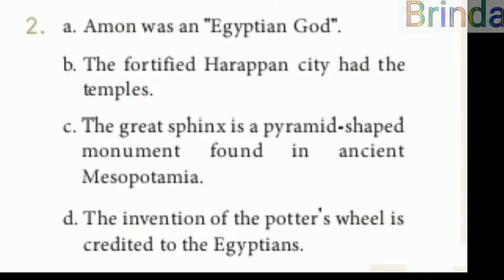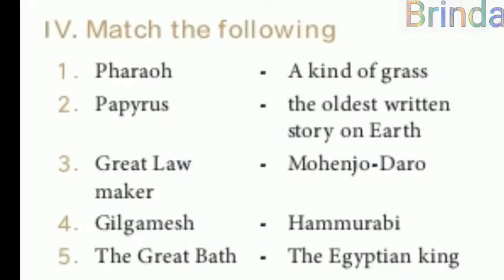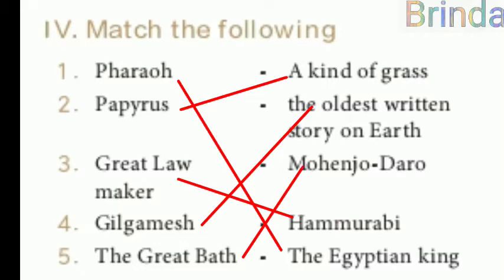Second: Ammon was considered the king of God in ancient Egypt. Moving on to match the following: Pharaoh — Egyptian king; Papyrus — a kind of grass; Great Law — Hammurabi; Gilgamesh — the oldest written story on earth; Great Bath — Mohenjo-daro.